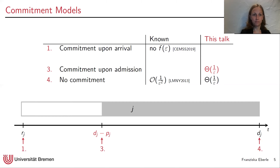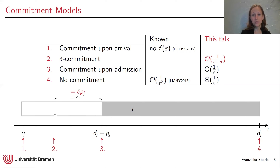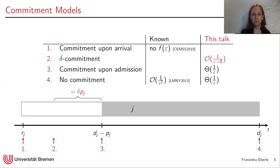We also consider delta-commitment, which interpolates between the first and third models. In this case, the commitment from the scheduler has to happen when the slack has reduced to a delta fraction of the processing time of the job. This models problems where the job owner might move a job to another computing cluster if it cannot finish on time. Our algorithm achieves a competitive ratio of 1/(ε−δ), which interpolates between the two ratios: if δ is bounded away from ε, this collapses to 1/ε, and when δ tends toward ε, the ratio diverges — matching the non-existence result for commitment upon arrival.